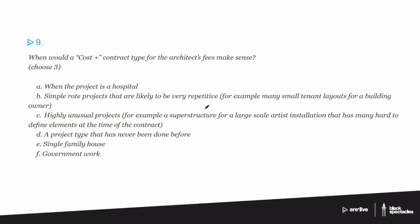C) highly unusual projects — for example, a superstructure for a large-scale artist installation that has many hard-to-define elements at the time of the contract. D) a project type that has never been done before. E) a single family house. F) government work.